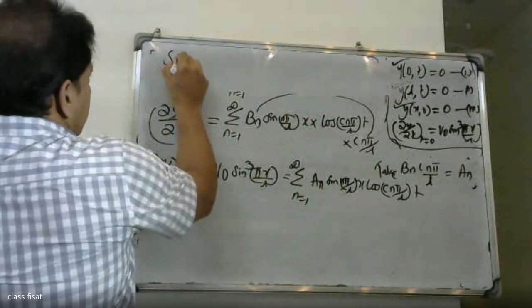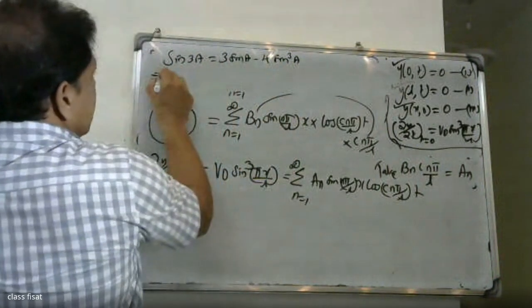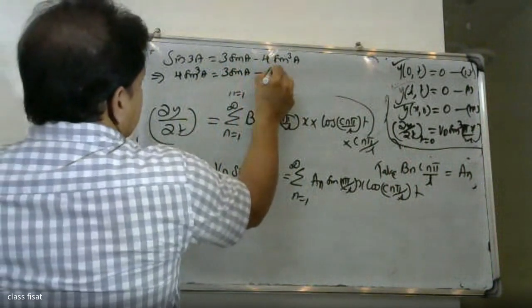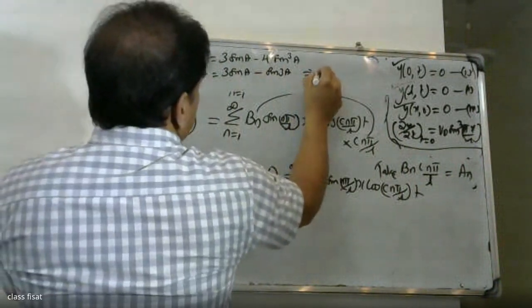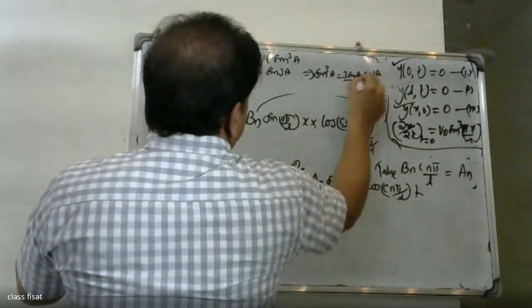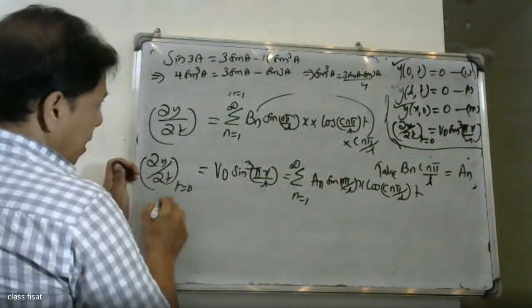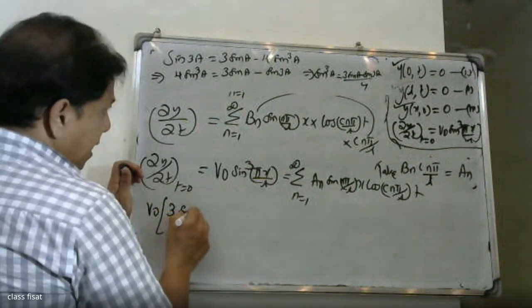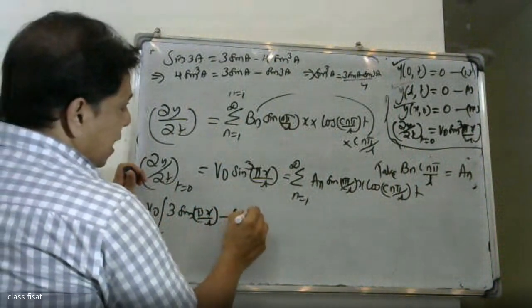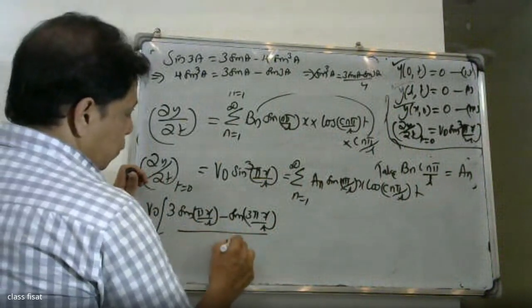Using the trigonometric identity: sin³(a) = (3·sin(a) − sin(3a)) / 4. Therefore v₀·sin³(πx/L) = v₀·(3·sin(πx/L) − sin(3πx/L)) / 4.